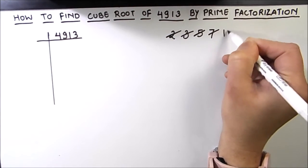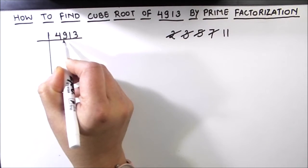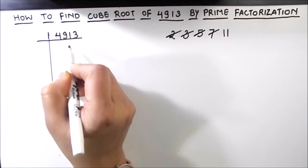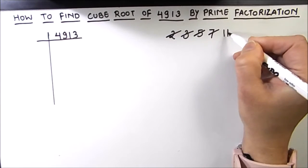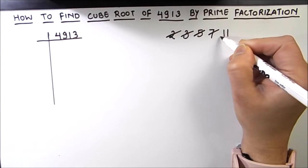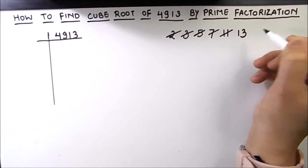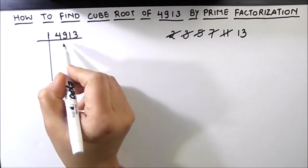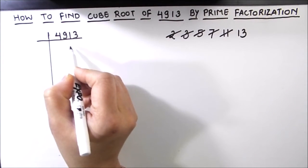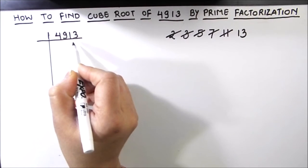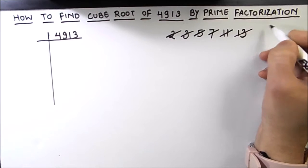The next prime number is 11: 11 times 4 is 44, this becomes 51, and 51 minus 44 is 7, giving 73, which is not fully divisible by 11. So 11 is not a factor. The next prime number is 13: 13 times 3 is 39, this becomes 101, 13 times 7 is 91, the remainder is 103, which is not fully divisible by 13. So 13 is also not a factor.